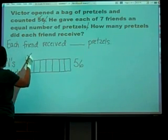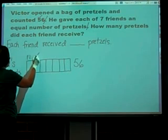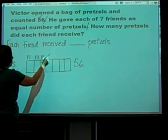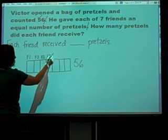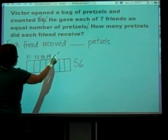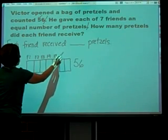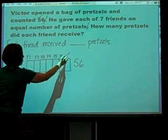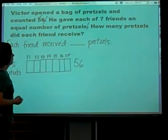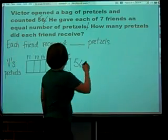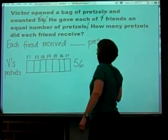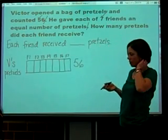And I can label them. This is friend one, friend two, friend three, friend four, friend five, friend six, and friend seven. And so now I'm going to put a check up here about my seven because I know that I've represented that information on my model.